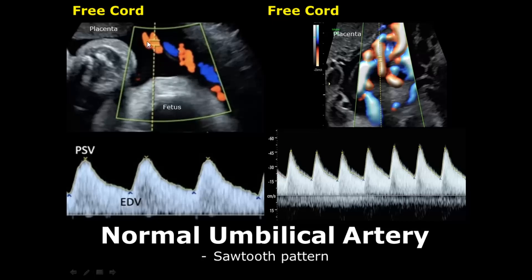We can locate the umbilical artery in the cord by applying color Doppler, and then we can place the sample volume in the red or orange zone, because it indicates that the blood is traveling towards the placenta — and the umbilical artery carries blood towards the placenta. We can place the sample volume there, and the pattern we see in spectral Doppler is the sawtooth pattern.